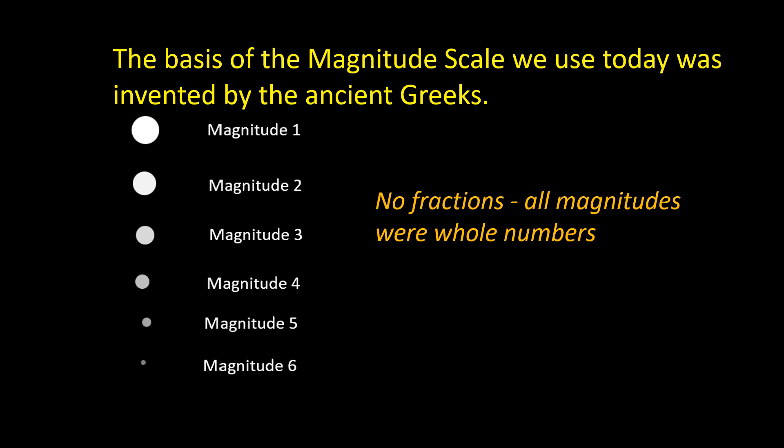However, over the centuries it became clear that fractional magnitudes were needed because, for example, not all stars assigned a magnitude of 1 have exactly the same brightness.